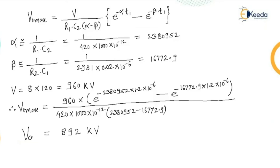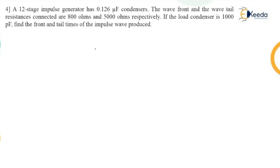So this is maximum output voltage which appears as 892 kilovolt. Now as I said we will be solving one more numerical on this. The numerical goes like this. A 12 stage impulse generator has 0.126 microfarad capacitors. So again here let us check the solution.